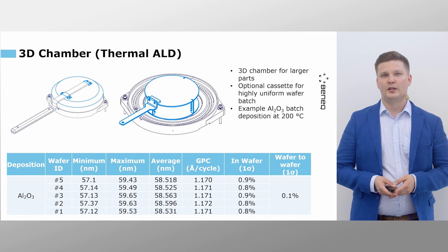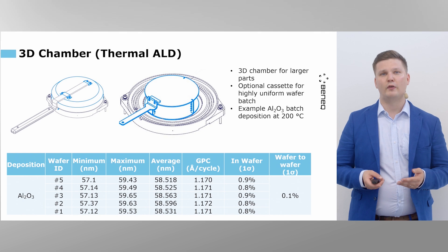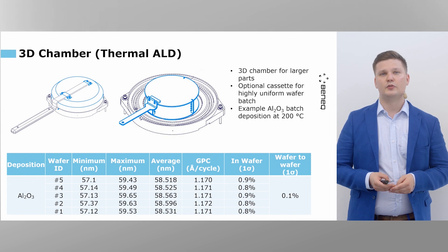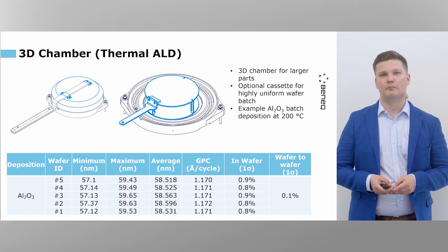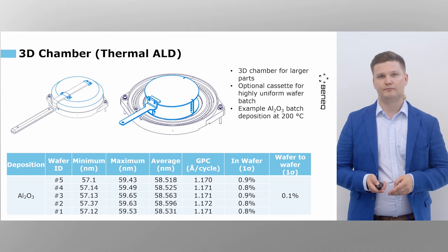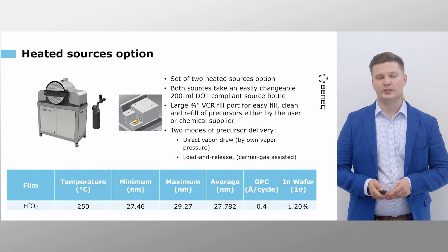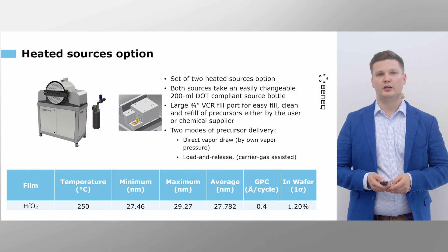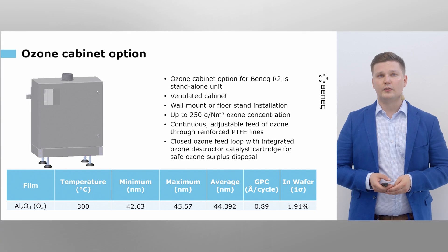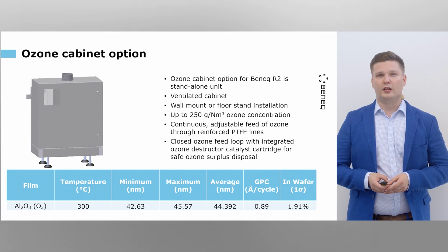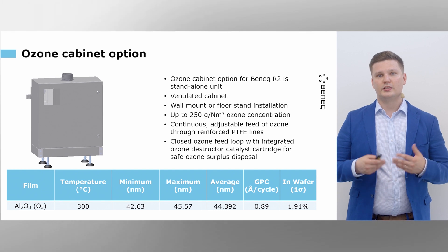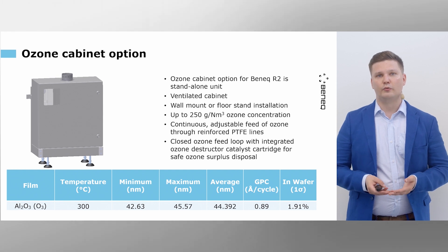For plasma processing we offer a plasma chamber that relies on our 300 watt capacitively coupled plasma source. For the 3D chamber, this is meant for larger parts or wafer batch, and we found that the homogeneity between wafers in the batch mode is really good. For low vapor pressure precursors we offer a set of two heated sources — 200 milliliter volume containers heatable up to 200 degrees C. For stronger oxidants we offer the ozone cabinet option, which is a safe way to deliver ozone with the tool.